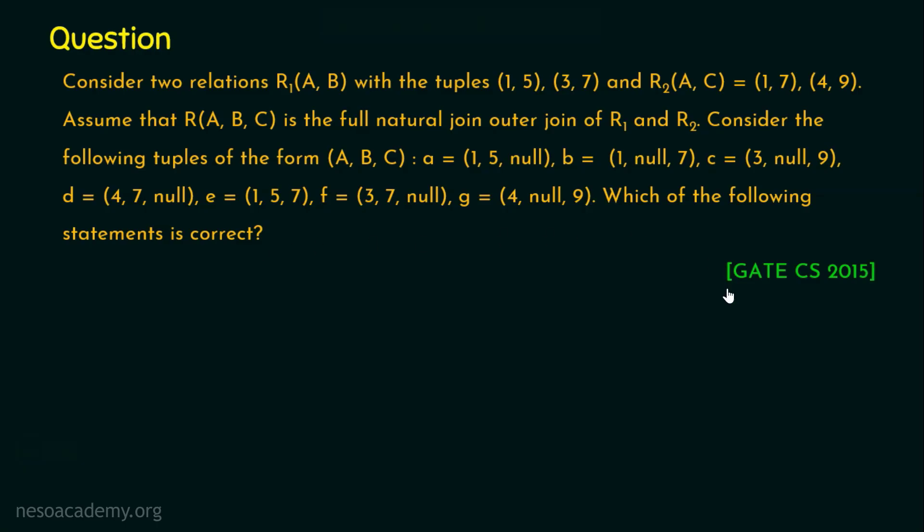This question was asked in GATE Computer Science in 2015. The options are: Option A: R contains tuples a, b, e, f, g but not c, d.